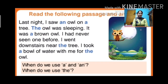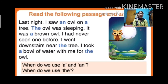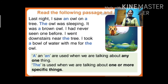Now read the passage carefully: 'Last night I saw an owl on a tree. The owl was sleeping. It was a brown owl. I had never seen one before. I went downstairs near the tree. I took a bowl of water with me for the owl.' When do we use 'a,' 'an,' and 'the'? 'A' and 'an' are used when talking about any one thing; 'the' is used when talking about one or more specific things.